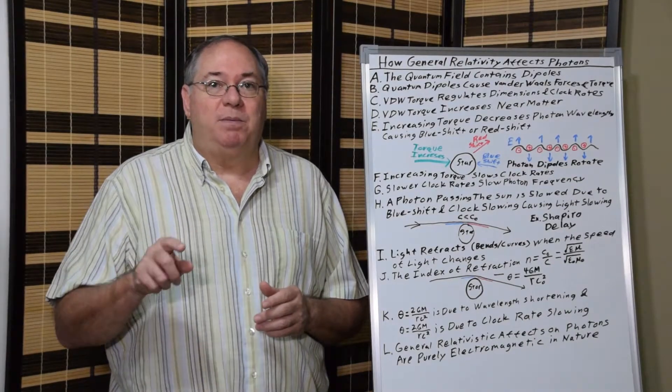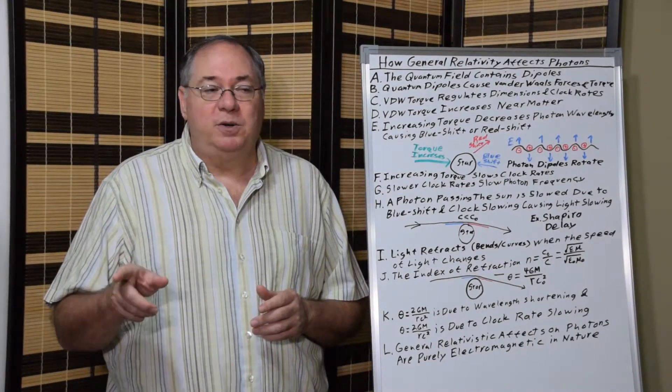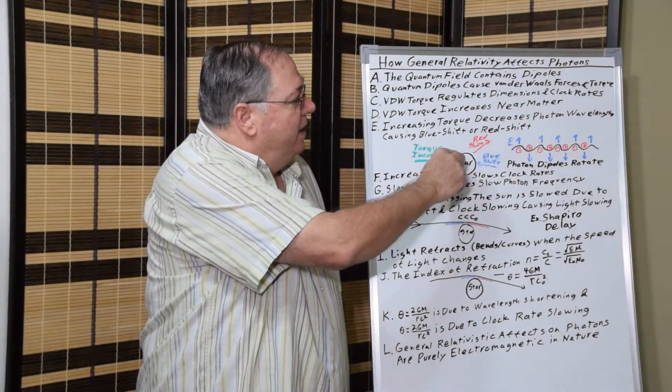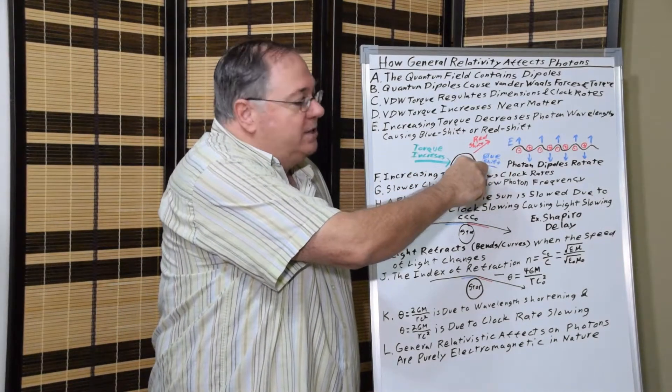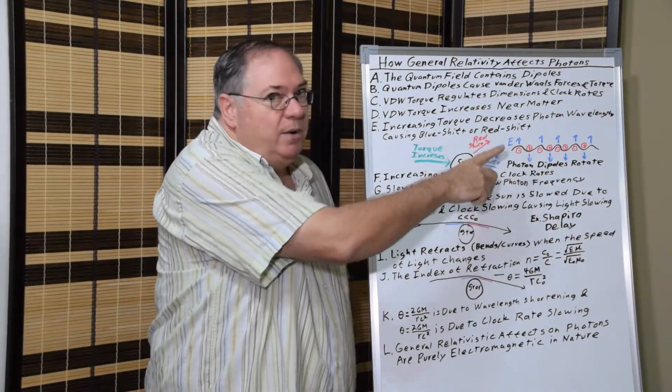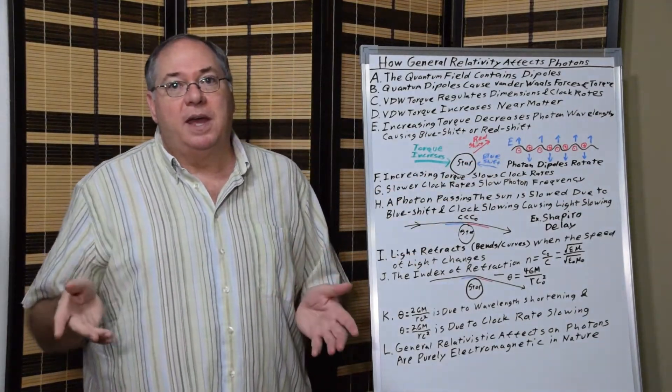Because of that rotation, they're affected by the quantum van der Waals torque, so that the rotation gets slowed which changes the wavelength. As a photon propagates through space, when it approaches a body of matter, you get blueshift if it's coming toward the matter.